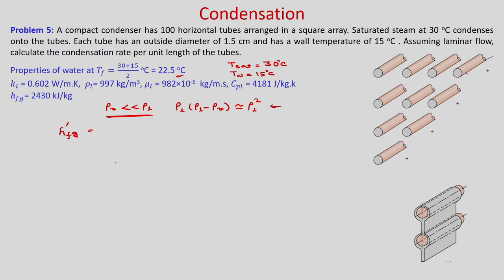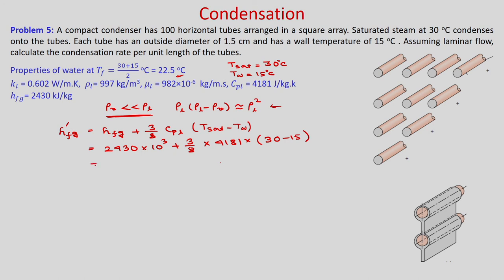We need to calculate the modified H_FG because of the large temperature difference. H prime FG equals H_FG plus 3/8 times CPL times (T_sat minus T_w). So H prime FG equals 2430 times 10 to the power 3 plus 3/8 times CPL 4181 times (30 minus 15), giving 2473 times 10 to the power 3 joule per kg.